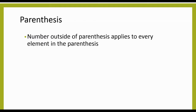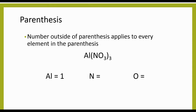We can also have parentheses. When you have parentheses, the number right outside applies to everything inside the parentheses. For example, in aluminum nitrate, Al(NO3)3, the three inside the parentheses applies to the O, and the three outside applies to both the N and the O. So aluminum has one atom, we have three nitrogen, and we multiply three times three to give us nine oxygen.